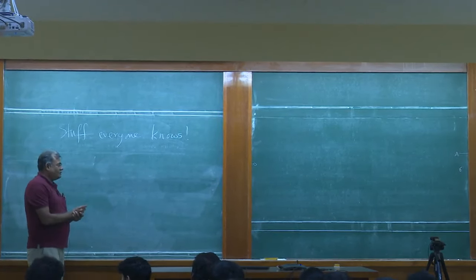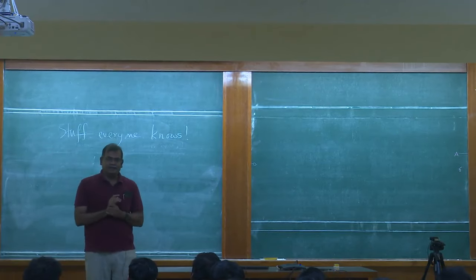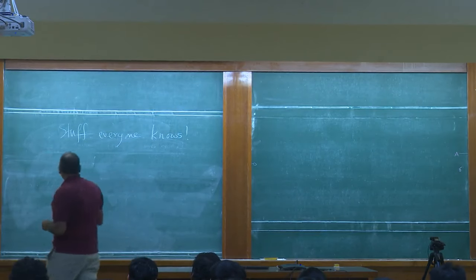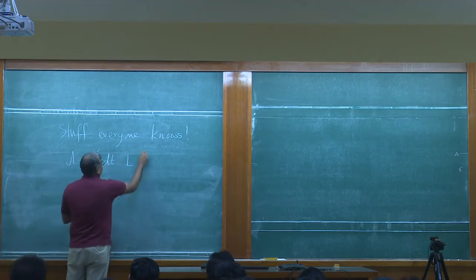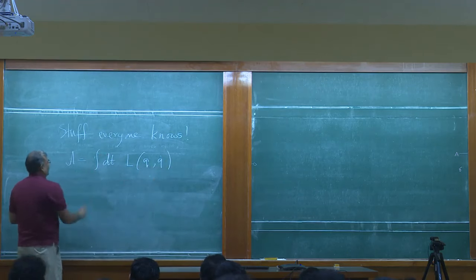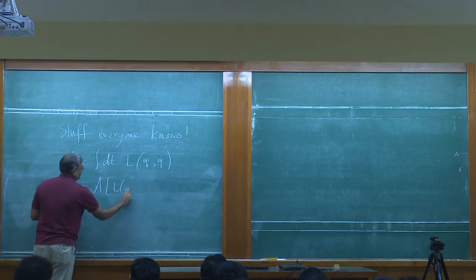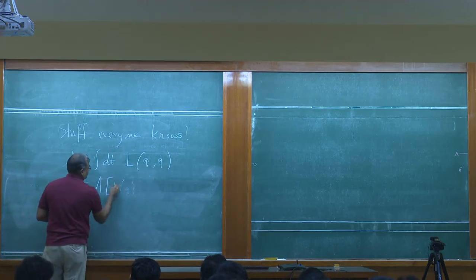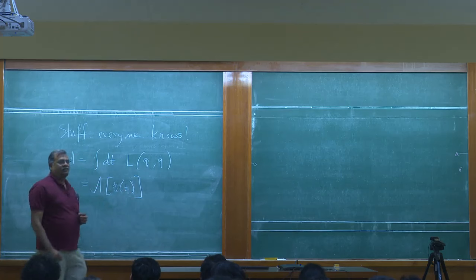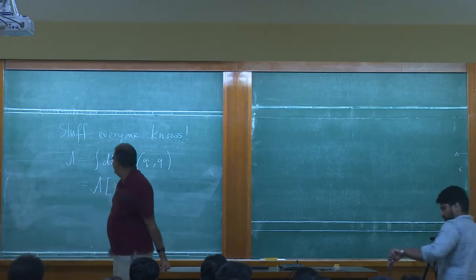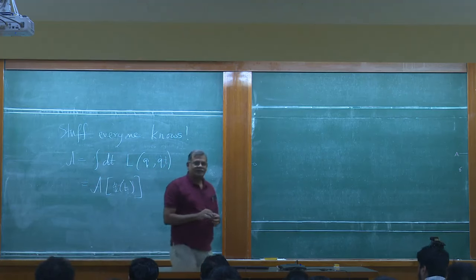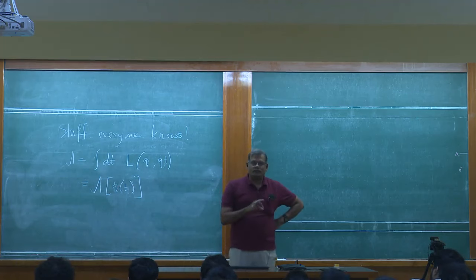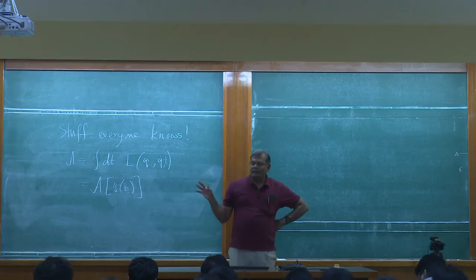I'm assuming that everybody here has done a course in classical mechanics — at least a standard first course. All of you know that there's something called the action, which for point-particle mechanics is basically the integral of the Lagrangian, and we call this a functional of q(t). If you know the path q(t), from that you can calculate what the action is going to be. L in general is a function of q, q̇, and also time, though the time dependence is not really of central importance to us. Lagrangians will definitely depend on q and q̇.